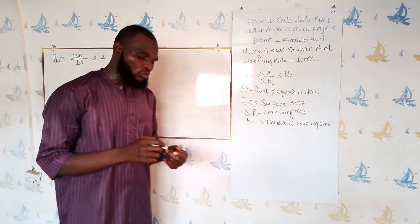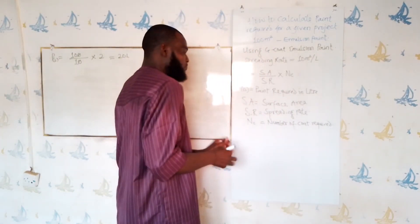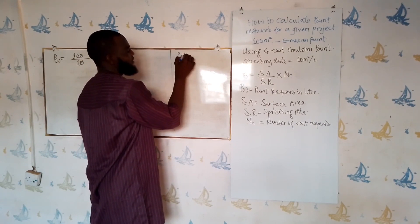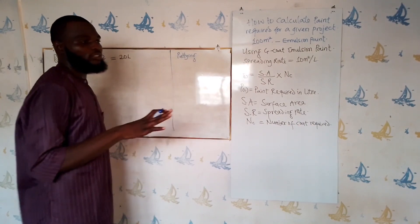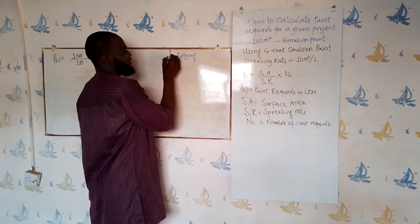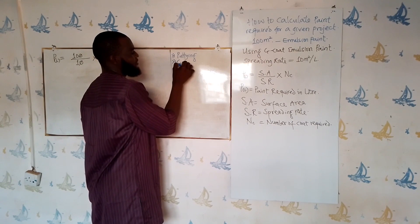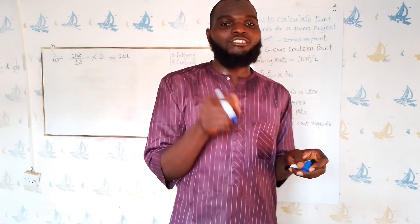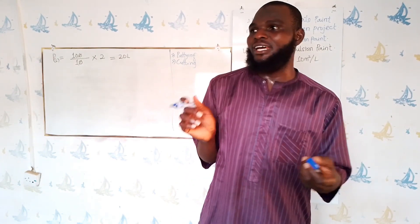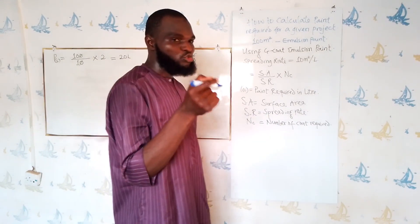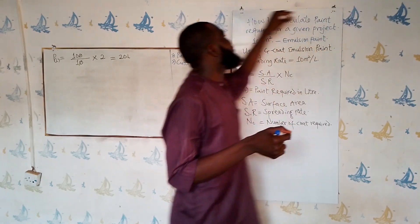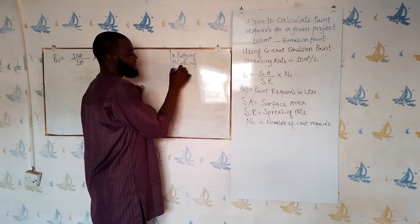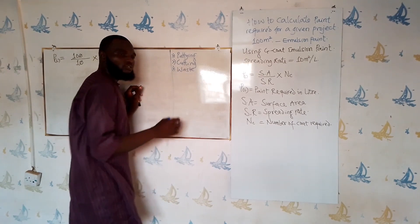But that is not all — we need to consider other factors. Number one, we have to consider cutting. Cutting means using a brush to cover all the edges and corners that the roller cannot reach. After using your roller, you also have to cut those edges. Depending on the nature of the work, you also need to consider waste.